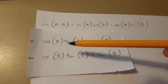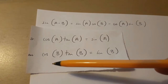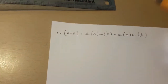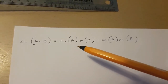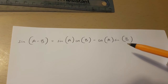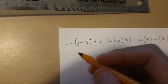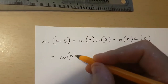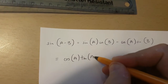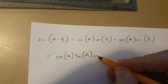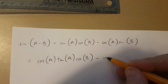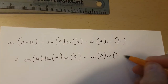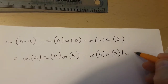Now, if cos A tan A is sin A and cos B tan B is sin B, then sin(A minus B), which equals sin A cos B minus cos A sin B, is going to be equal to cos A tan A multiplied by cos B, minus cos A multiplied by cos B tan B.